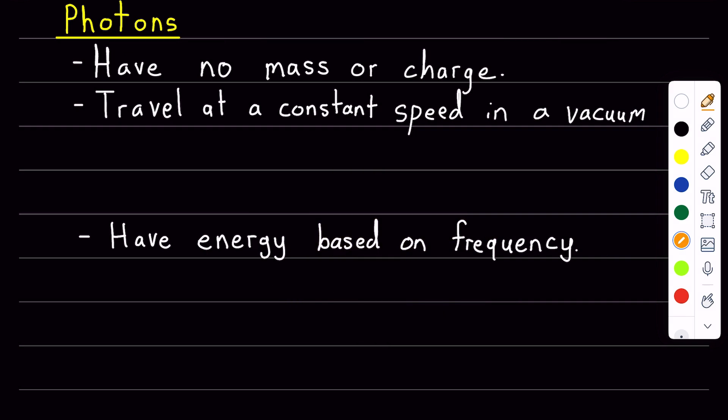So a photon is a particle of light and it has no mass and is electrically neutral. A photon will travel in a straight line in a vacuum unless it interacts with matter.